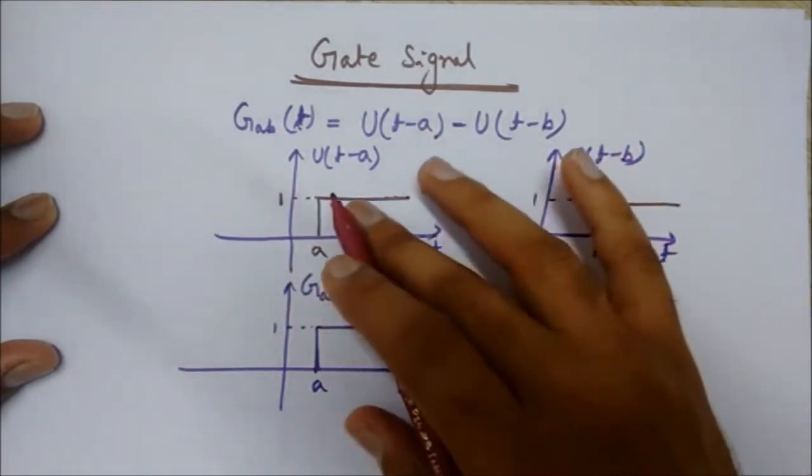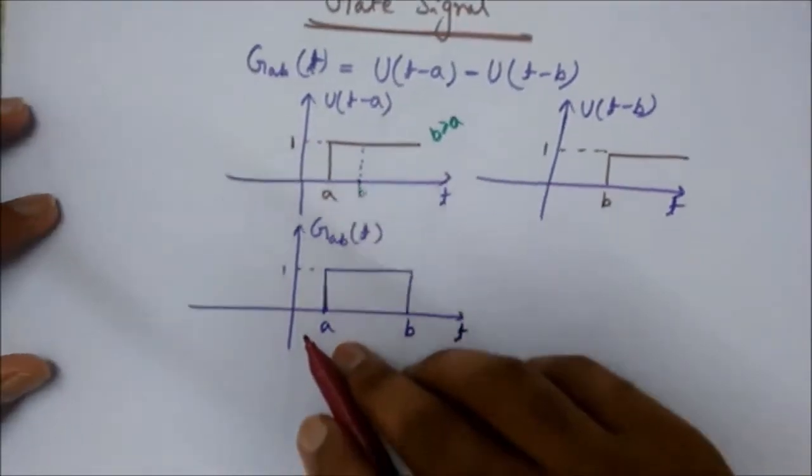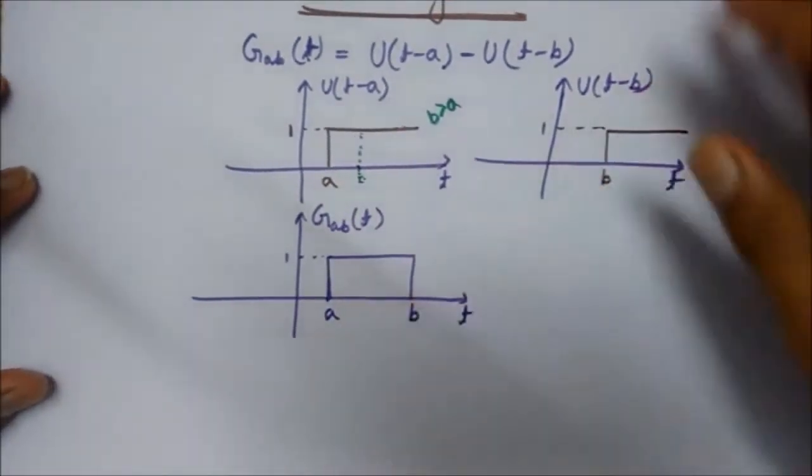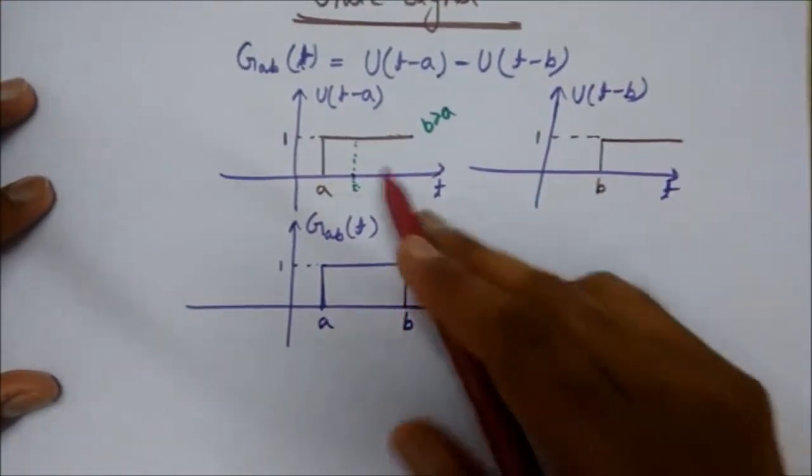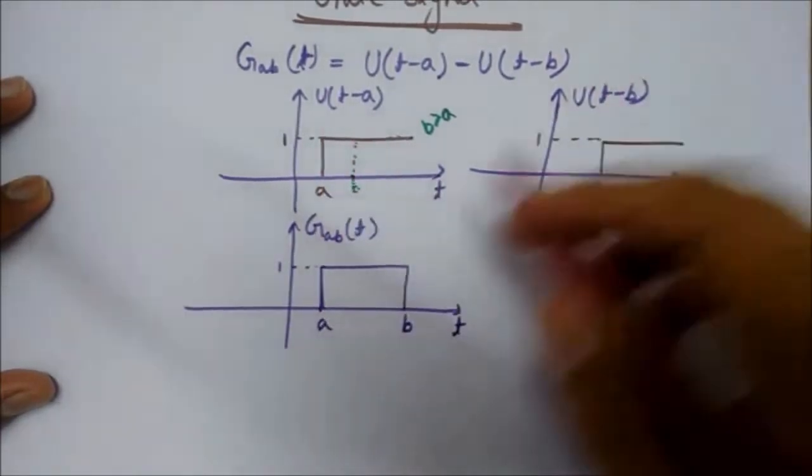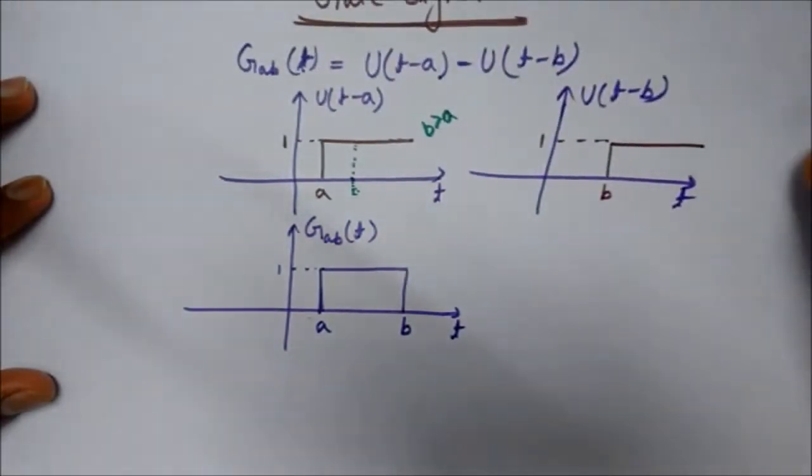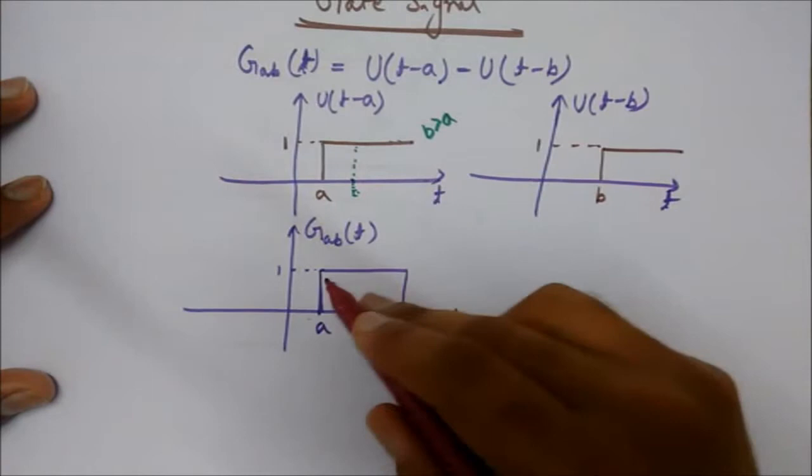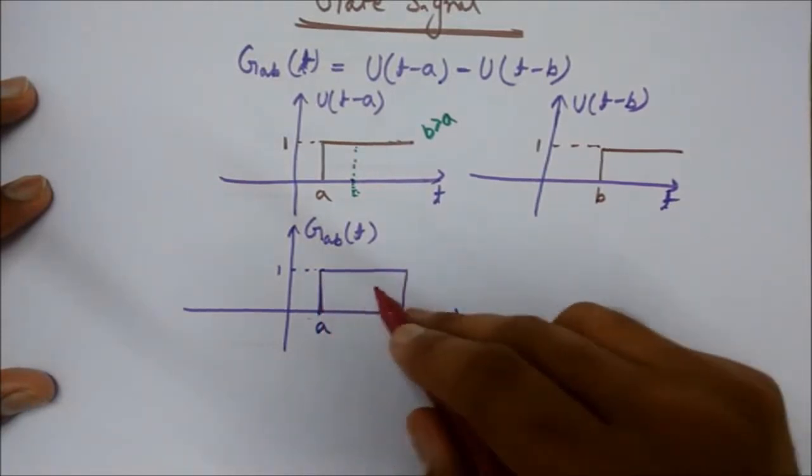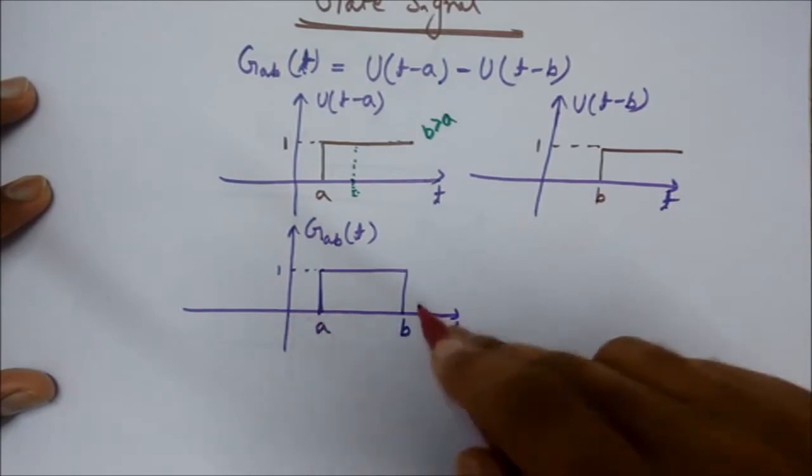So if I subtract this U(t-b) from U(t-a), then I will get this gate signal between a and b. It would be of rectangular shape between a and b. So this is the gate signal defined between a and b. Its value is 1 between a and b, and except at other values it is 0.